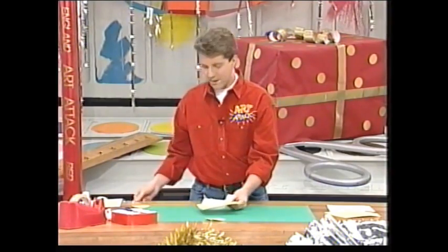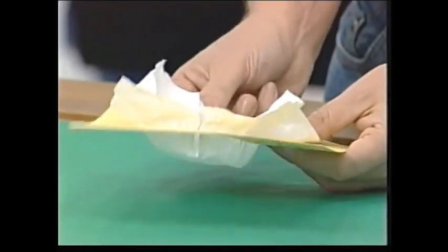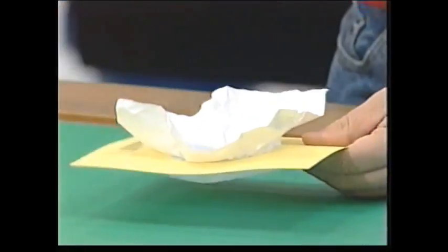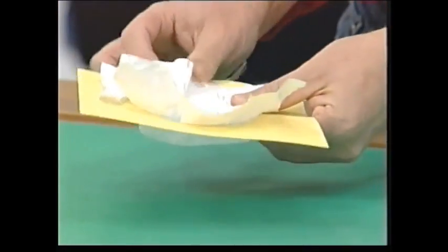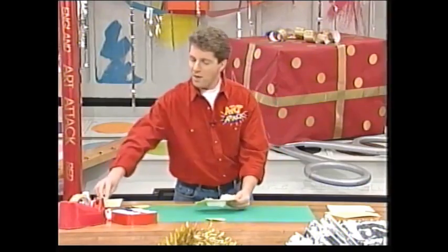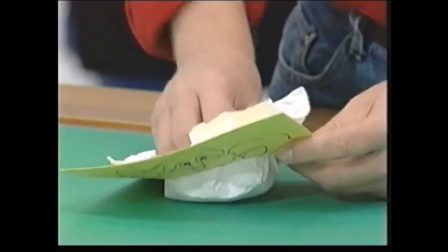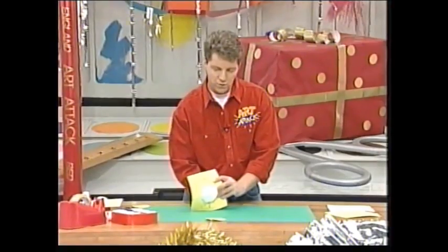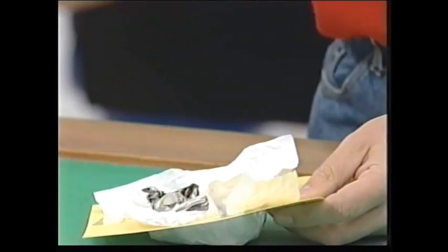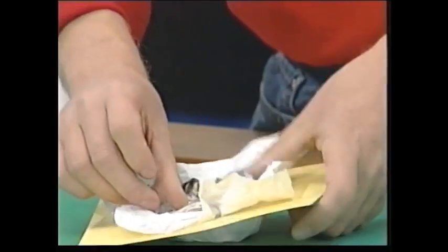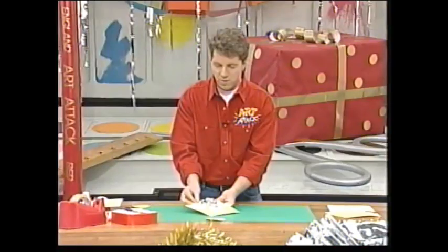And when you're happy with that, turn it over and tape it into place. Now, I'm just going to tape it really quickly to show you. You can put loads of tape on and make it nice and secure. And then stuff it with scraps of paper or newspaper balls. And they're going in the back. And when you're happy with that, see that? Nice stuffing there, so it's nice and fat. Just tape all of that stuffing into place on the back just to make it secure.